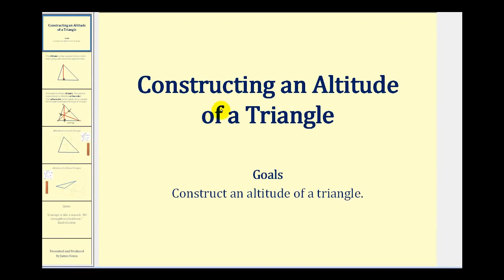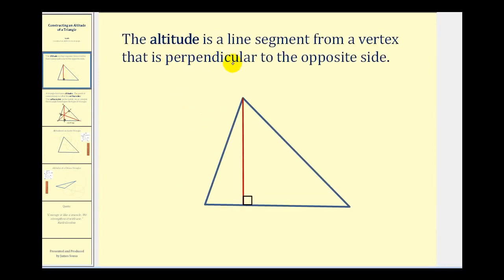Welcome to a lesson on how to construct an altitude of a triangle. An altitude is a line segment from a vertex that is perpendicular to the opposite side. So this red segment is an altitude because it's a line segment from this vertex to the opposite side and is perpendicular to the opposite side.